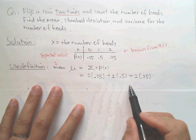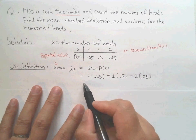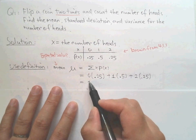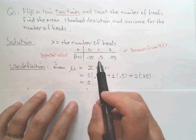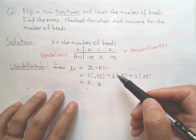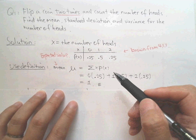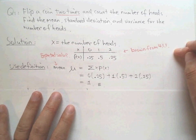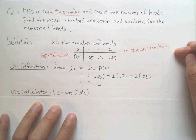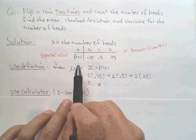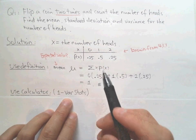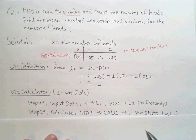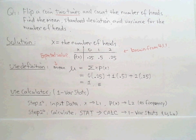The result is zero plus 0.5 plus 0.5, which equals one. So the mean is exactly 1. That's using the definition. For the standard deviation and variance there is a bit more calculation, so I'm going to show you how to use the calculator with one-variable stats to directly find the population mean, standard deviation, and variance.